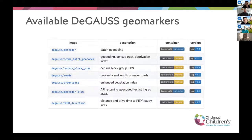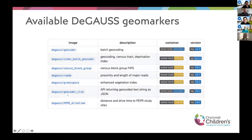This is a screenshot from our GitHub page showing some other containers we have available. We're usually almost always working on new ones. We have several different geocoders, the roads container, one for green space, and a drive time container for certain health centers including Cincinnati Children's — showing how long it would take someone to drive to their hospital.